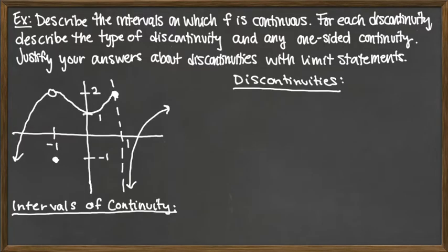For this example, we're going to look at the graph that's given and determine the intervals on which the function is continuous. At every place where it's not continuous, we're going to talk about the type of discontinuity and whether it's left or right continuous — that's the one-sided continuity. To justify the type and one-sided continuity, we'll need some limit statements. Looking at the overall picture, it's easiest to figure out where it's discontinuous first, then go back and look at the intervals of continuity.